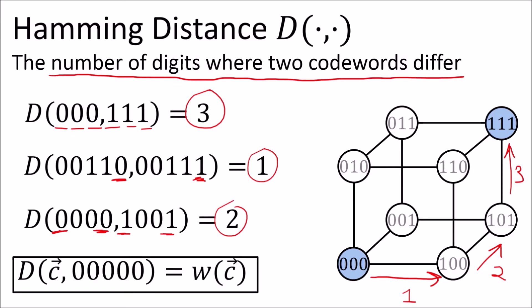The distance between a code word c and the code word of all zeros is just equal to the Hamming weight of that code word, because counting the ones in the code word is the same thing as counting the number of digits which differ from zero.